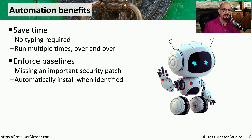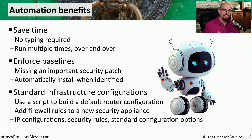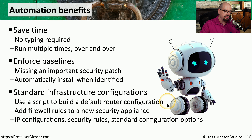Automation can also help us enforce security baselines. We might have a script that provides an update or upgrade with security patches. That script waits for the patch to arrive in a particular folder, identifies that a new patch exists, and then automatically deploys that patch to all of the systems that need it. I've also configured scripts for infrastructure configurations, especially when setting up multiple systems that all need to have exactly the same security. You might set up a script that automatically builds a default router configuration with all the unique settings that your organization requires.